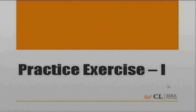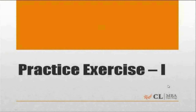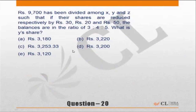Let us move to practice exercise 1, Question 20. Rupees 9700 has been divided among x, y and z such that if their shares are reduced by rupees 30, 20 and 50, the balance are in the ratio of 3 is to 4 is to 5.